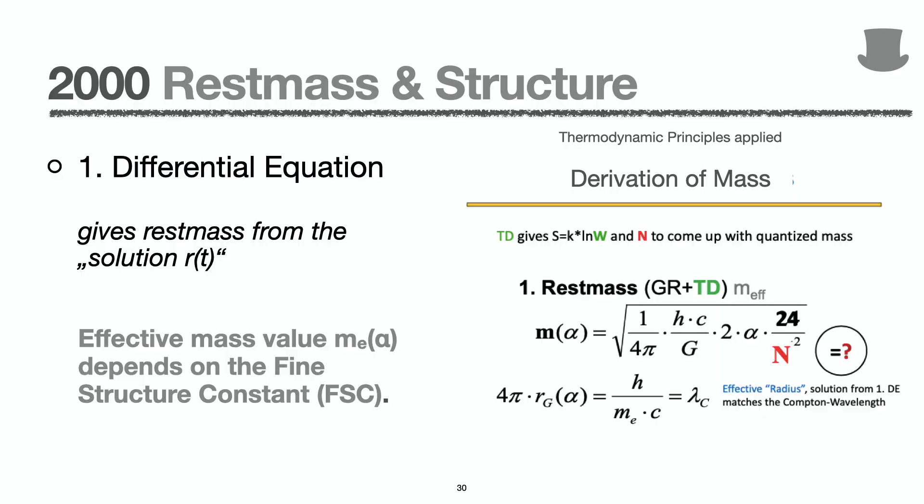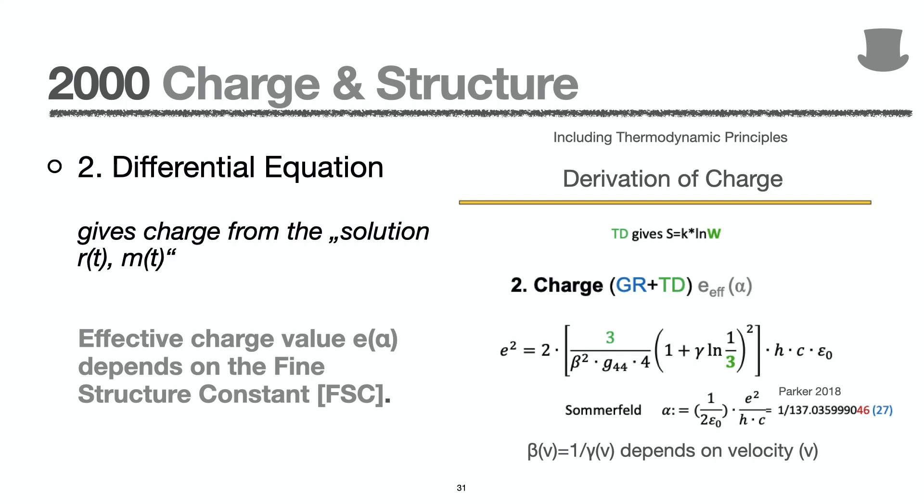Two important results of the first differential equation are two effective quantities. The mass of the electron and the wave radius Rg. Both quantities depend on alpha and the quantum number n. The same to the elementary charge but not depending on n.